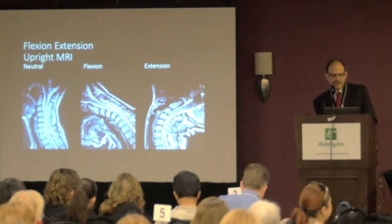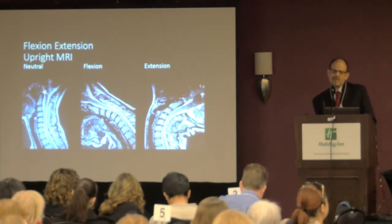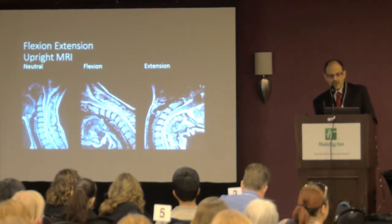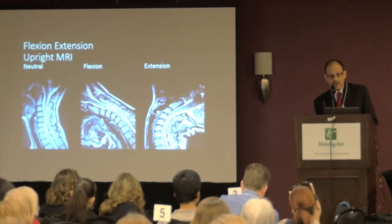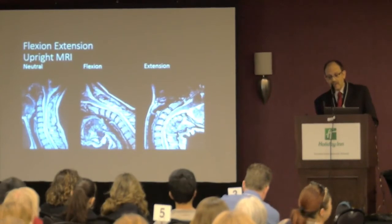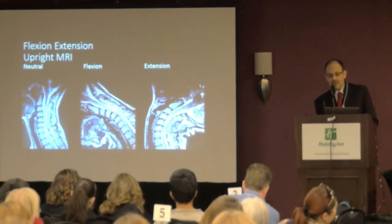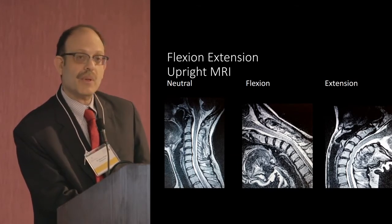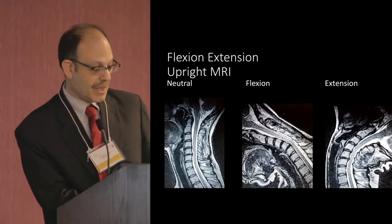In neutral, the person is standing up and nothing is really pushed — no real issues. Whereas when this person bent forward, there is a lot of angulation and the cord is pulled against it. And when they lean back, a piece of disc pushes out against the spinal cord. You don't really see that in the neutral position, and if they were lying flat, it also would not be seen.